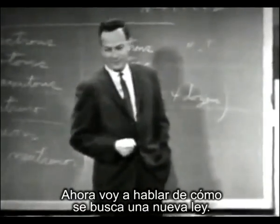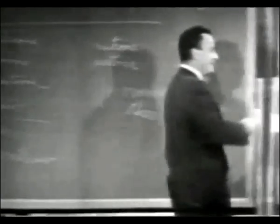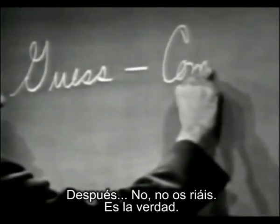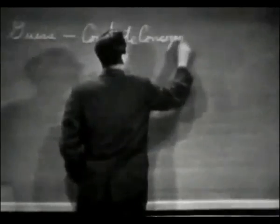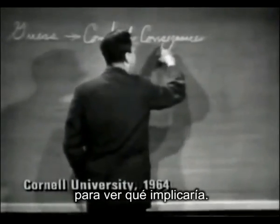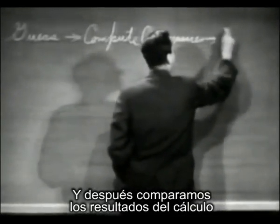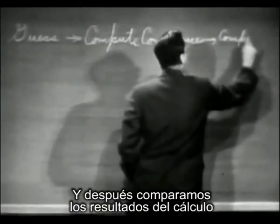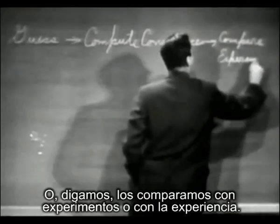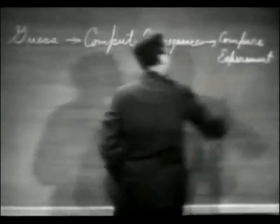Now I'm going to discuss how we would look for a new law. In general, we look for a new law by the following process. First, we guess it. Then we compute — no, don't laugh, that's really true. Then we compute the consequences of the guess to see what, if this law that we guessed is right, what it would imply. And then we compare those computation results to nature, or compare to experiment or experience — compare it directly with observation to see if it works.